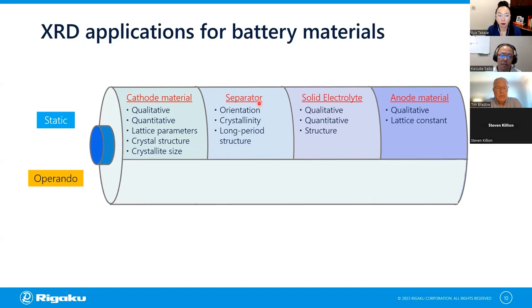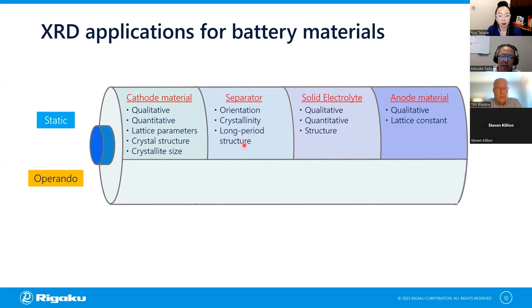The separator is typically polymer-based. For a polymer separator, you can analyze the preferred orientation by X-ray diffraction, and also the crystallinity — how many percent of the polymer is crystalline or amorphous. The polymer is made from both amorphous and crystalline parts, and the long-period structure of the polymer can also be analyzed by XRD. For electrolyte and anode materials, the applications are about the same as for the cathode.